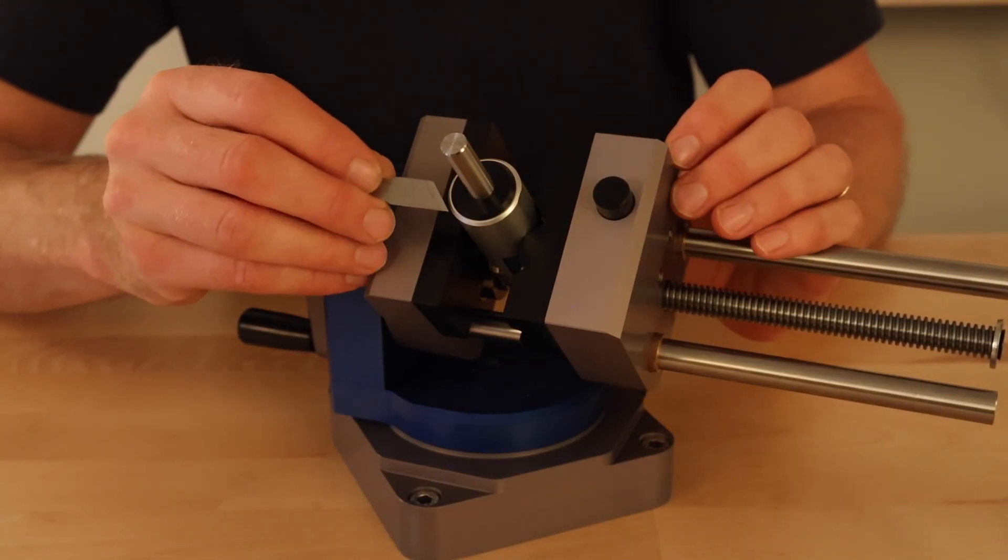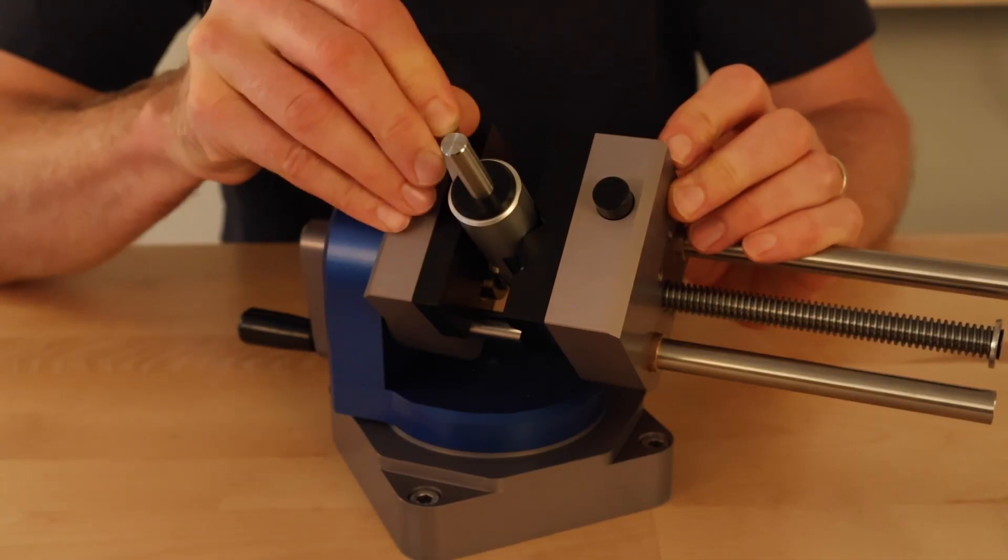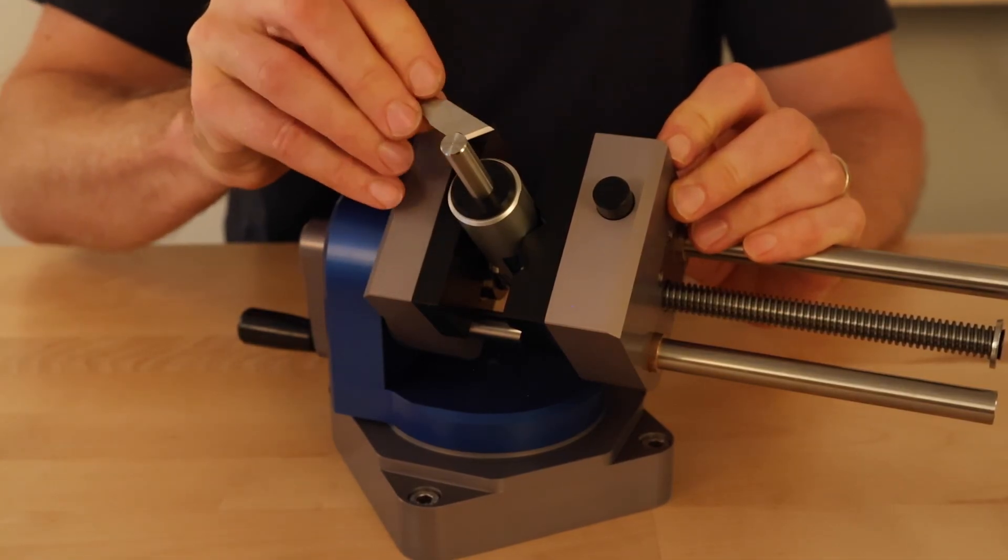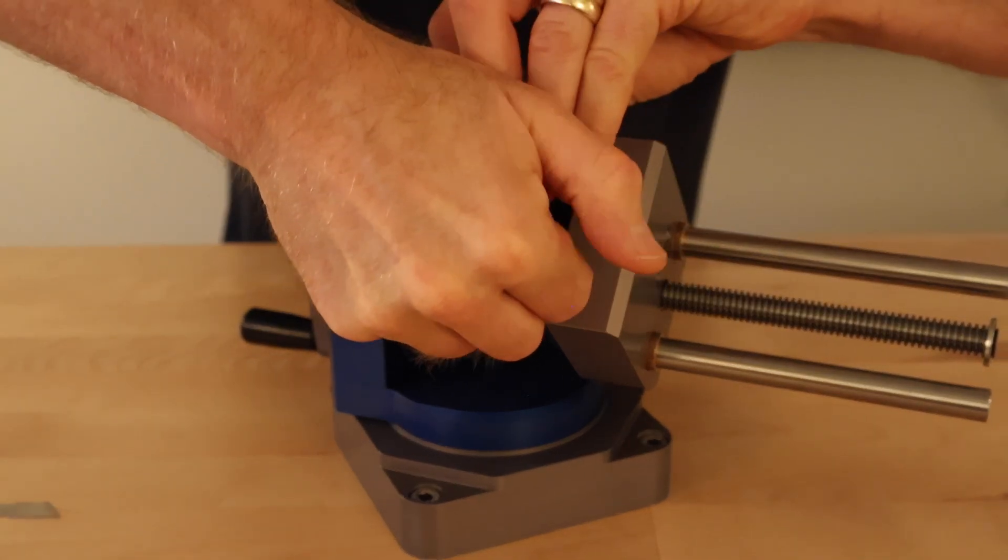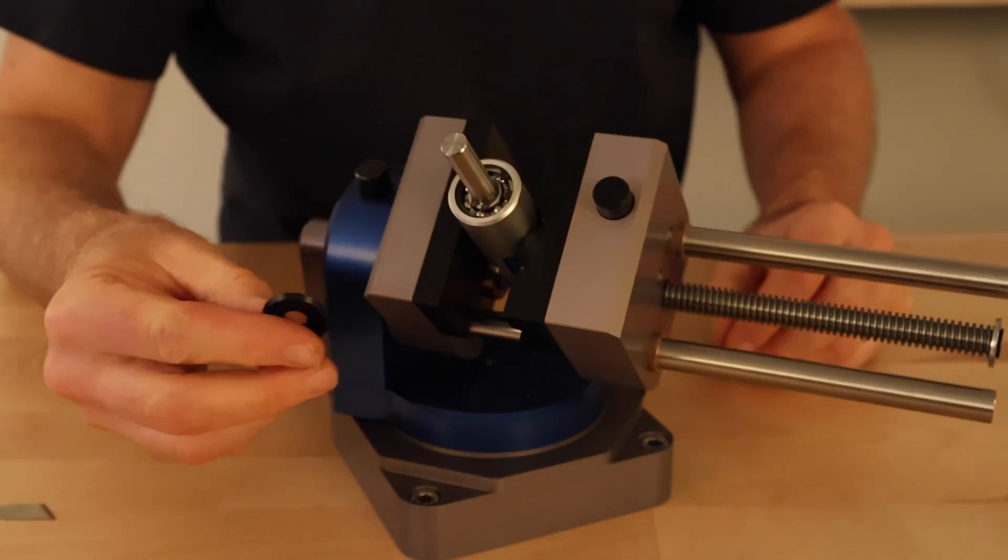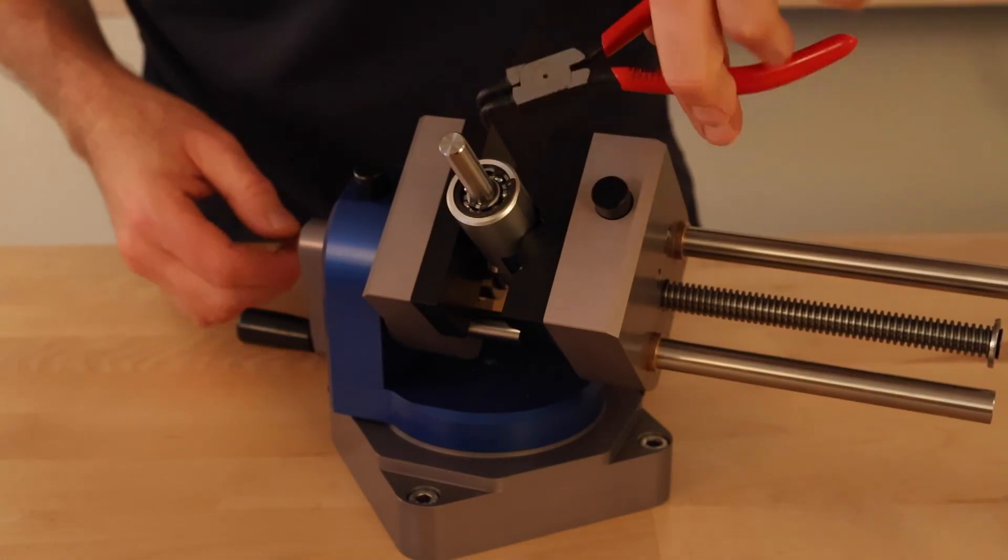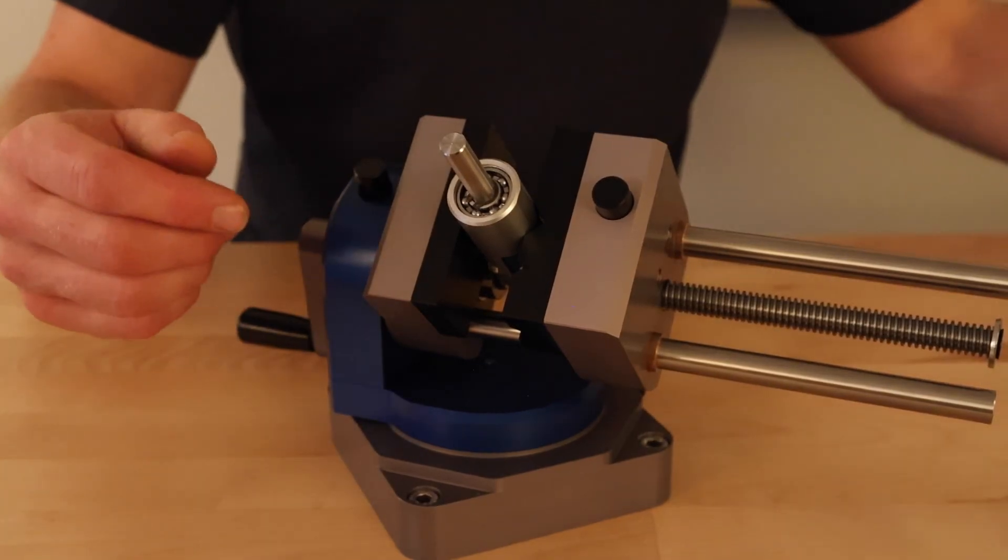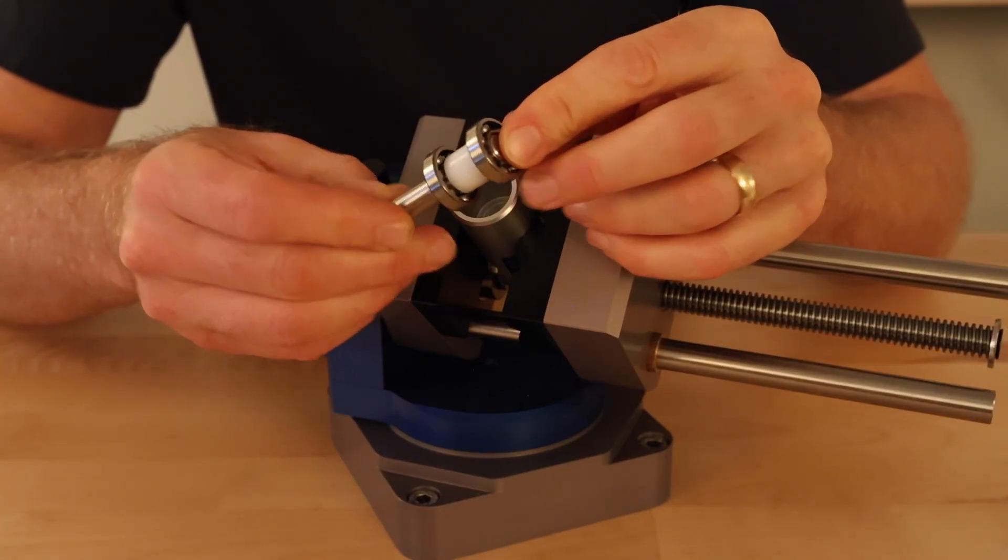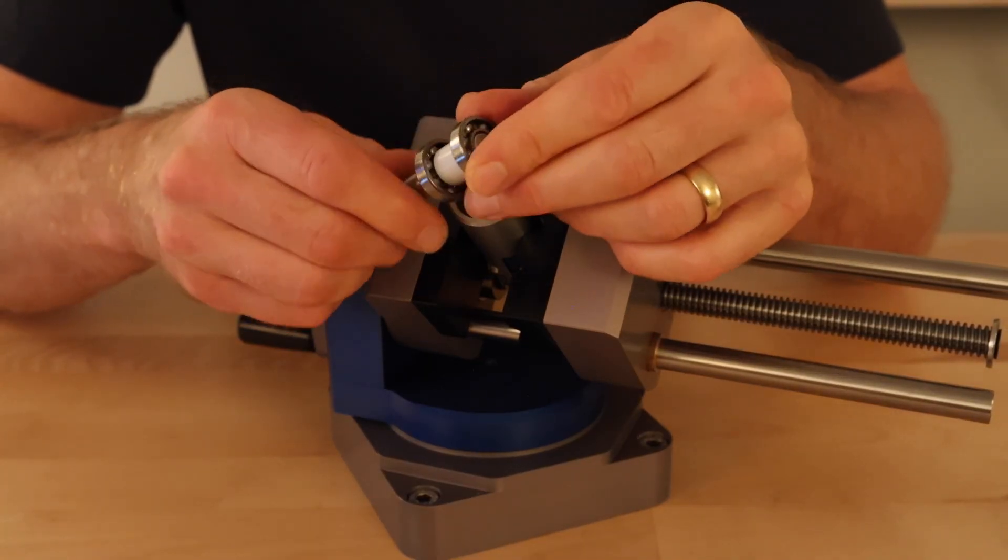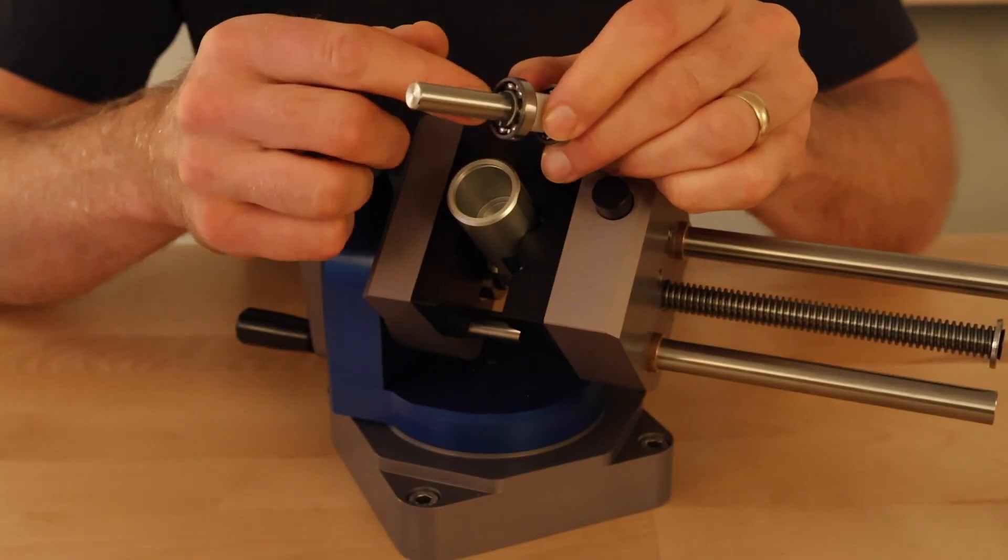Now use our handy dandy bench vise here, and show you the drive train on this. So there is a dust cap on the back, and that just comes right off. It's a transition fit. And then here is the bearing sub-assembly that goes in there, and it's got two open bearings. It's got a spacer and a retaining ring.